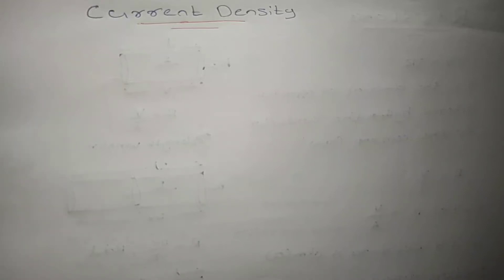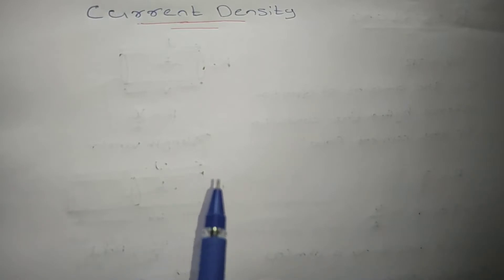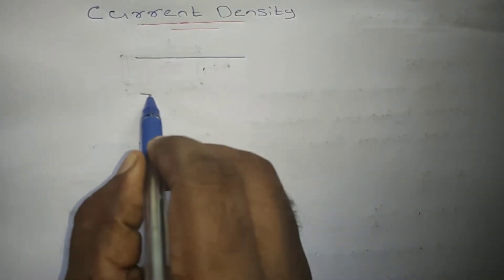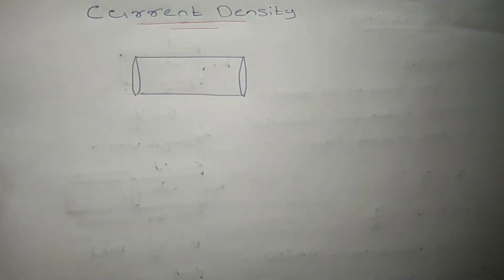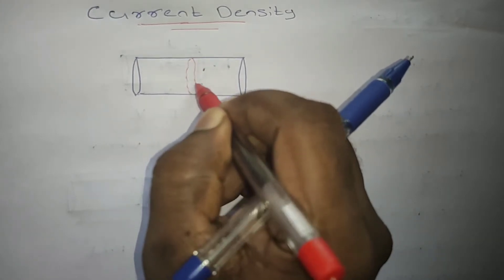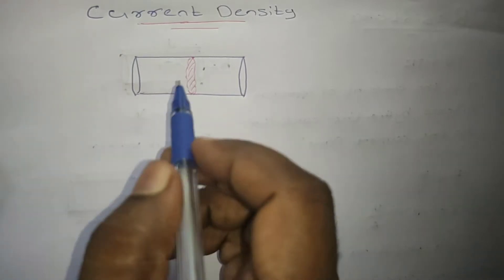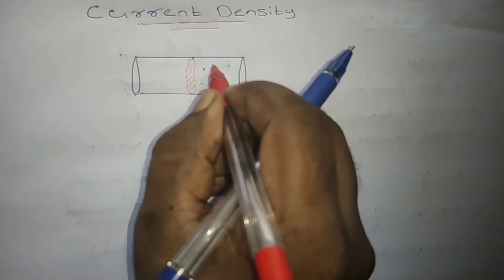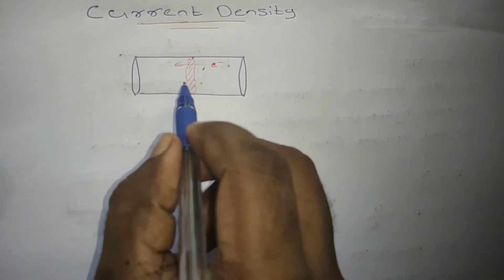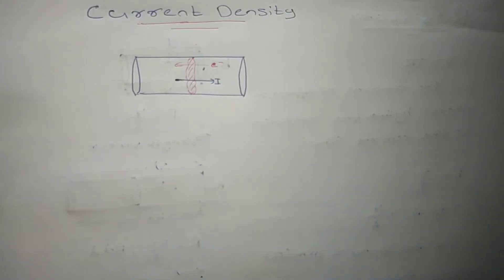Hello students, welcome back to my channel. In this video I am going to discuss current density. So if we take a conductor, we are going to consider a cross-section area. Through this cross-section area, charges are moving — that means electrons are moving in this direction. In the opposite direction is the current direction. The current is a vector quantity, and we need to say how much current flows through unit area, so we introduce the term current density.